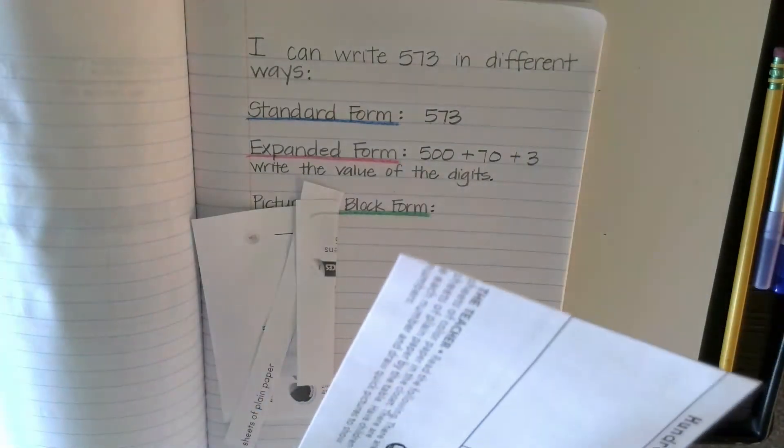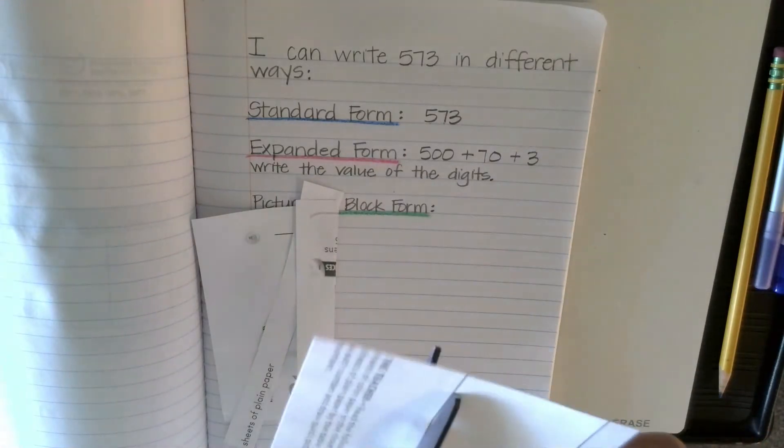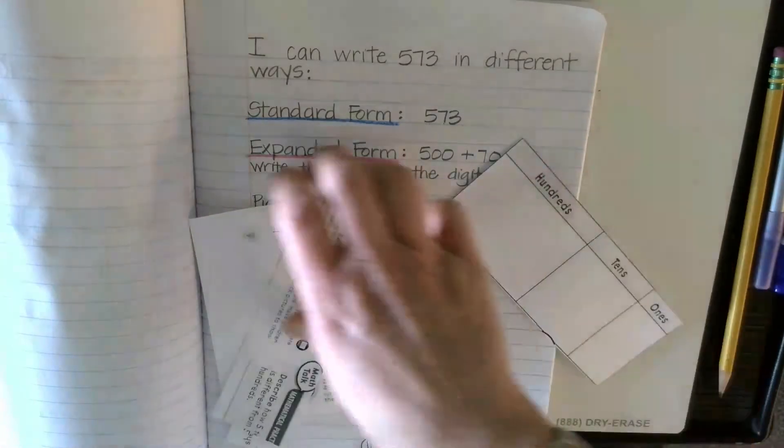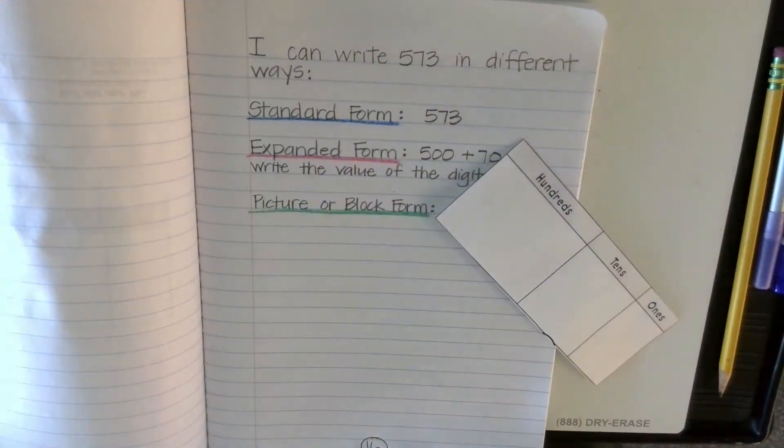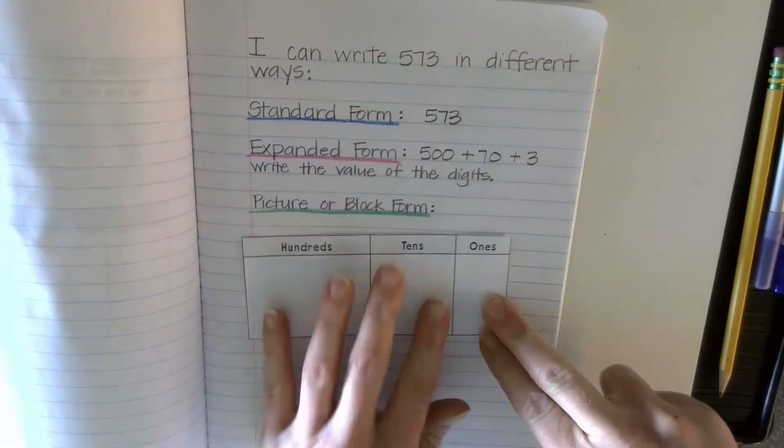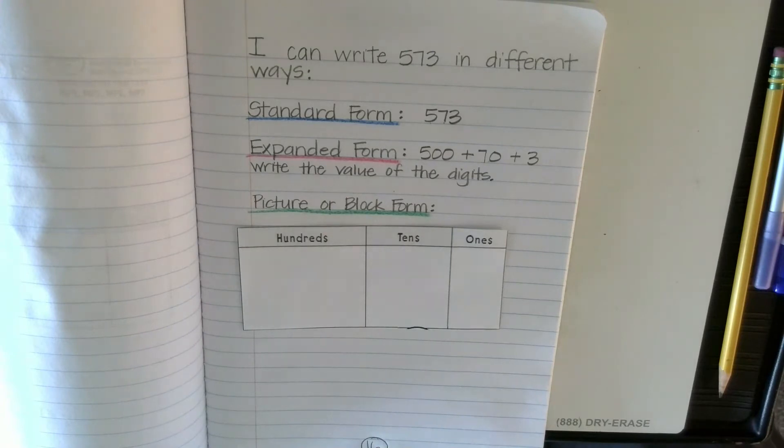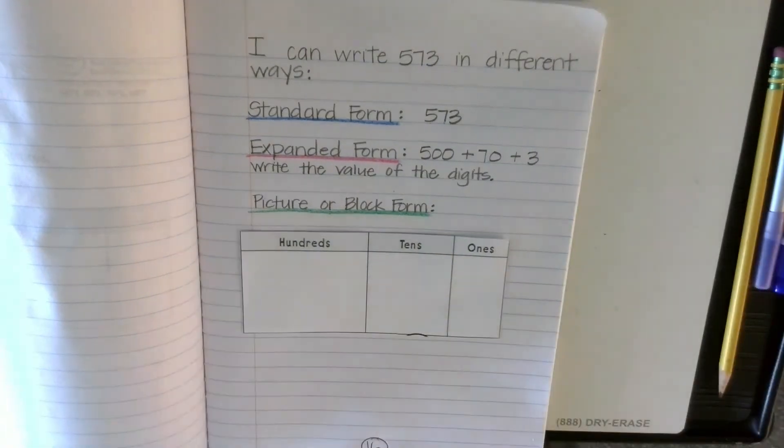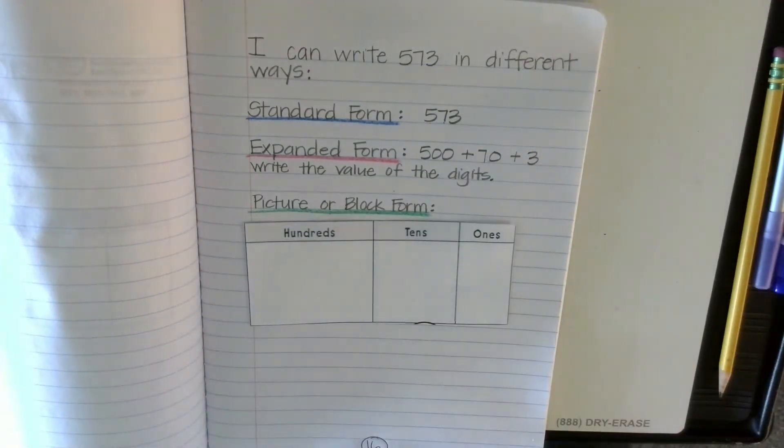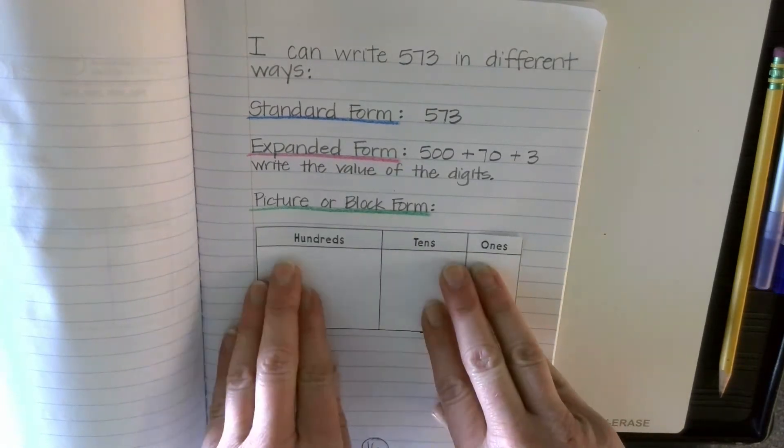Again, this is page 99 in your Go Math book. Now if you accidentally threw away page 99, you can go to the Go Math e-book that's in my library in Think Central and you can print one of these, print another page 99.